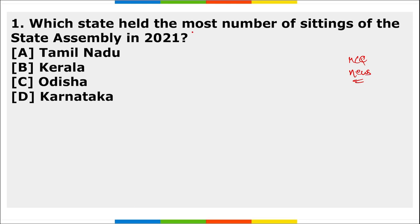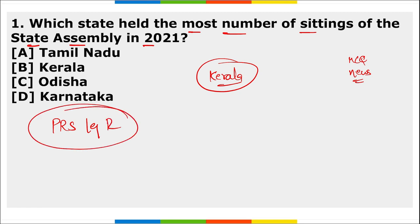First question: which state held the most number of sittings of the state assembly in 2021? The answer is Kerala. As per a recent study by the think tank PRS Legislative Research, Kerala held the maximum number of sittings of the state assembly in 2021. Note that Kerala also has its own OTT platform called Sea Space and is the first state to have its own internet service provider.